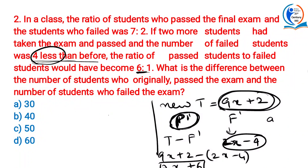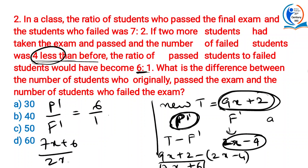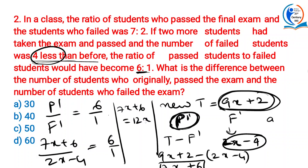It is given that the ratio of passed to failed is 6 to 1, which means (7x + 6) / (2x − 4) = 6. So 7x + 6 = 12x − 24. Simplifying, 5x = 30, therefore x = 6.